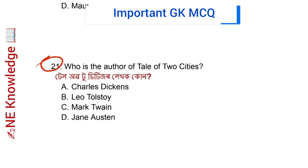Question number 21: Who was the author of 'A Tale of Two Cities'? Correct answer: Option A — Charles Dickens. This question is important for DME exams.